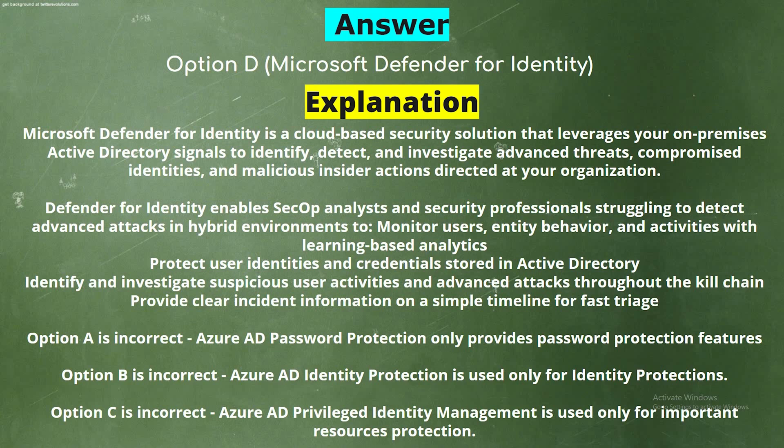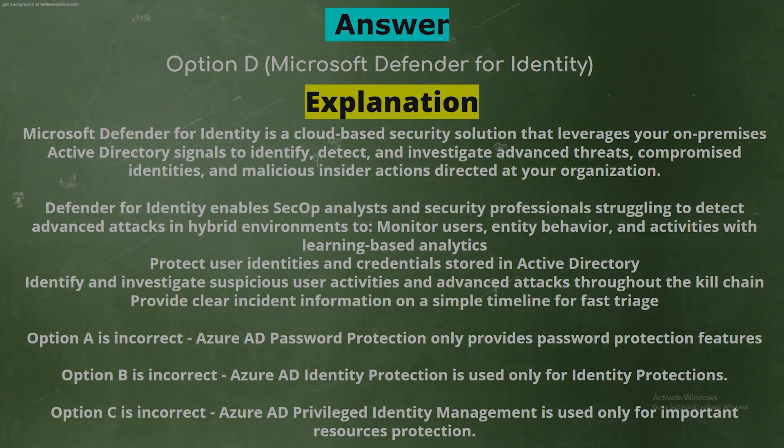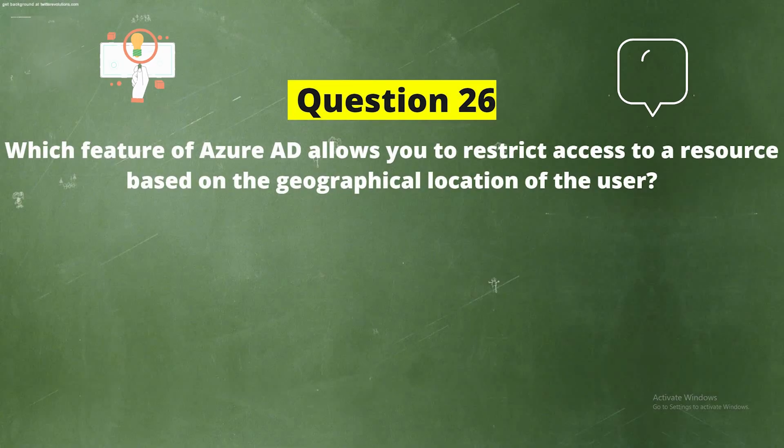Option A is incorrect — Azure AD Password Protection only provides password protection features. Option B is incorrect — Azure AD Identity Protection is used only for identity protections. Option C is incorrect — Azure AD Privileged Identity Management is used only for important resources protection.